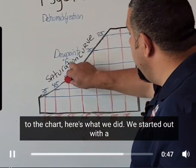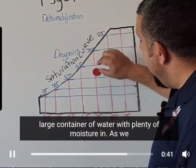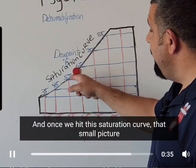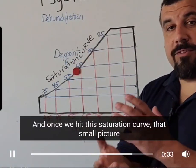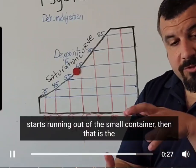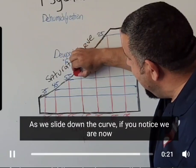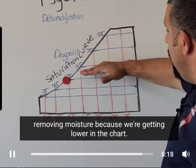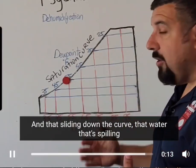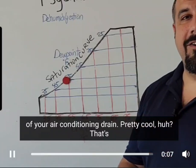Going back to the chart, here's what we did. We started out with a large container of water with plenty of moisture in it. As we cool the air, that large pitcher became a small pitcher. And once we hit this saturation curve, that small pitcher now cannot hold any more of that water. So as the water starts running out of the small container, that is the process of sliding down this curve. And as we slide down the curve, we are now removing moisture because we're getting lower in the chart. That water that's spilling over the smaller container is the condensate that runs out of your air conditioning drain.